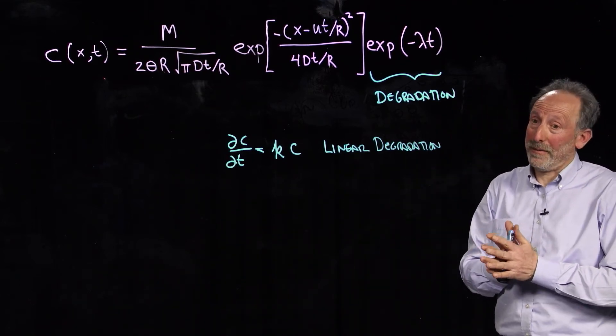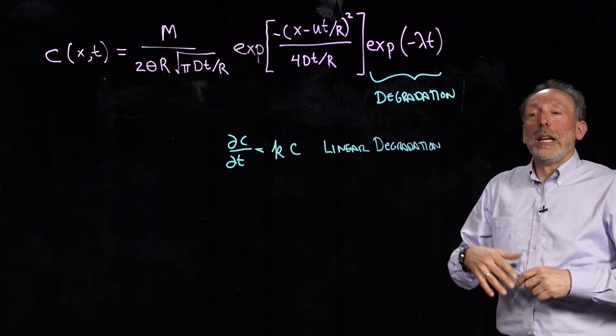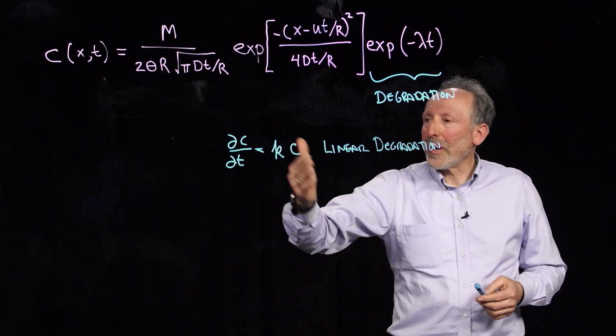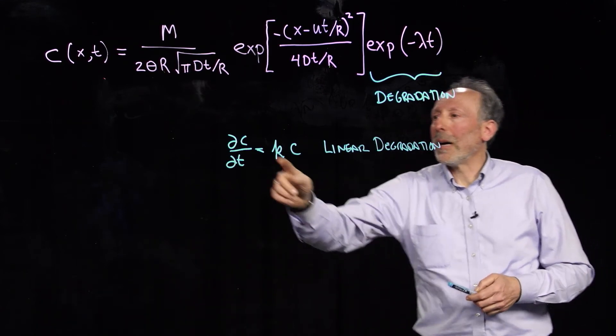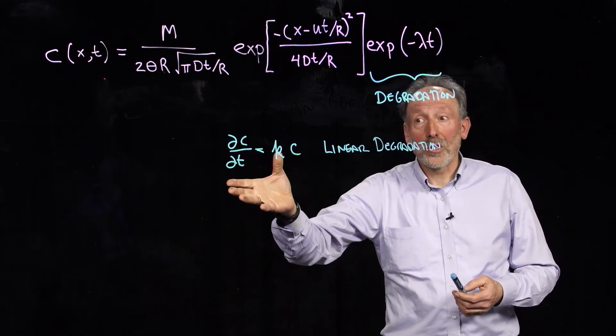It's a very convenient form of degradation, because if we double the concentration, the same solution will apply. So, in other words, it's linear. If you double C here, you can double C there, and it still will solve the same equation.